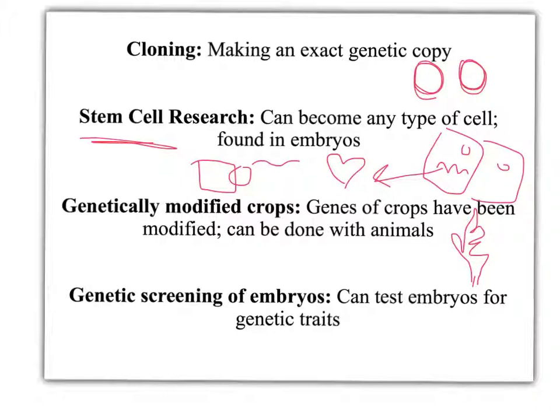A final thing you can do is genetic screening of embryos. This is where embryos are created in a test tube through IVF, and they're then screened to see if they have particular traits. For instance, if you knew that you had muscular dystrophy or another genetic disease in your family, you might want to screen the embryos after using IVF, and then destroy any that have the gene you don't want. Embryos that don't have this gene are then implanted back into the woman so that they can grow to be a full fetus.